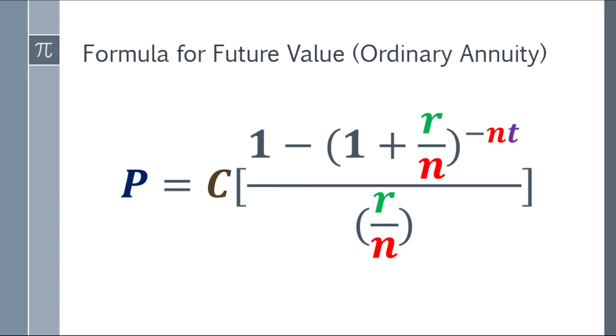And let's go for the formula. The present value equals the cash flow times the quantity. In the numerator part, we have 1 minus the quantity 1 plus R over N, and the exponent is negative N times T. The denominator is R over N.